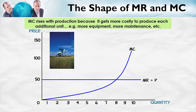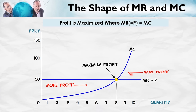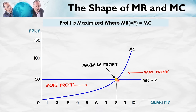Where is profit maximization? Profit is maximized where marginal revenue equals marginal cost. For a competitive firm, marginal revenue equals price, so profit is maximized where price equals marginal cost. Intuitively, on the left of that point, additional revenues exceed additional costs, so you sell more. On the right, costs exceed revenues, so selling less increases profit. That's why the point where price equals marginal cost is the profit-maximizing point.